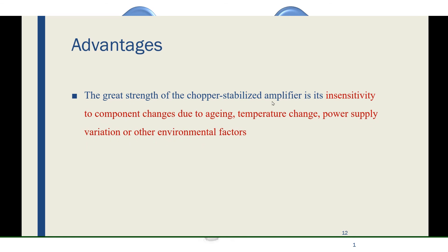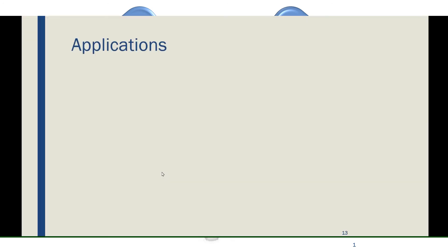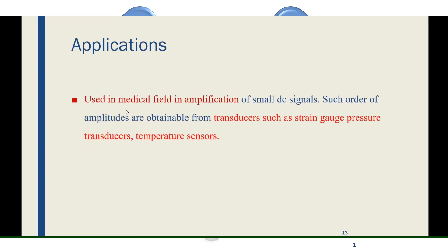The main advantage of the chopper amplifier is insensitivity. It is not affected by aging — even after long use, the device remains reliable. It is also unaffected by temperature changes, environmental factors, or power supply variations; the chopper-stabilized amplifier remains stable in all these conditions. This amplifier can be designed in both single-ended and differential input configurations. Applications include use with strain gauge pressure transducers and temperature sensors such as thermistors and thermocouples.